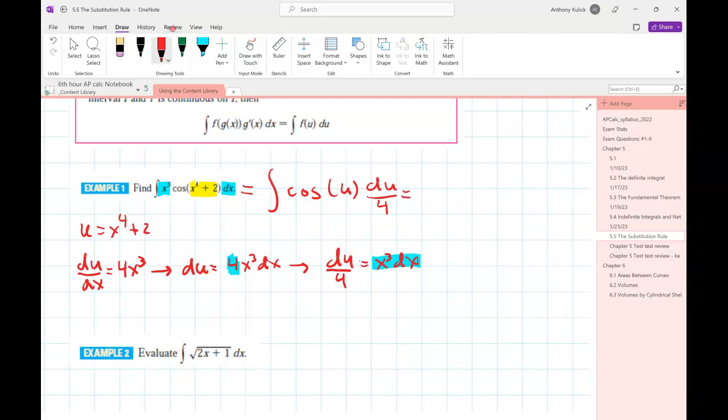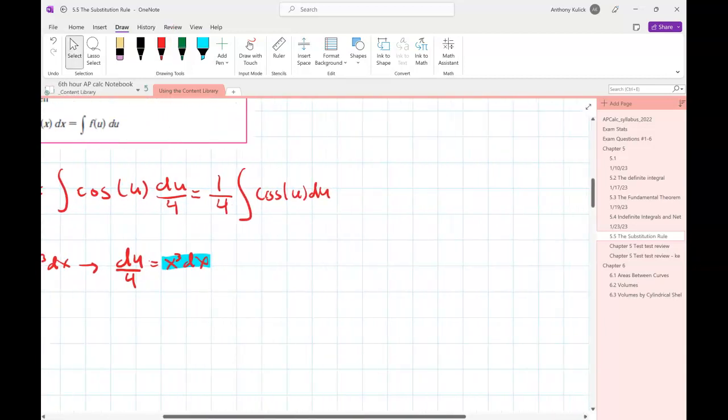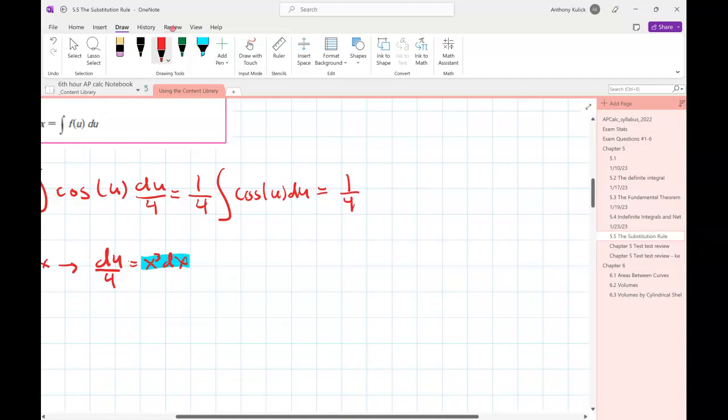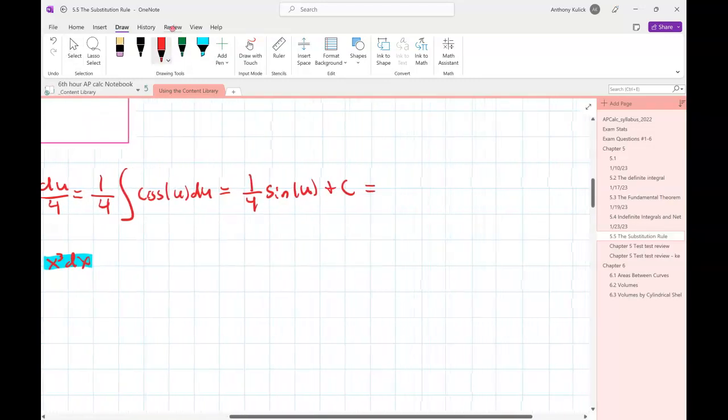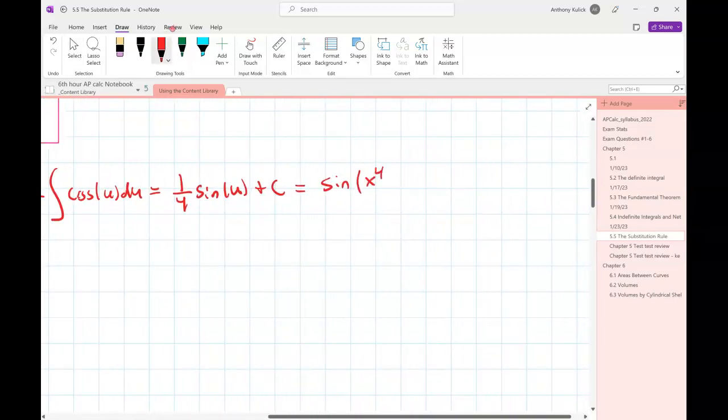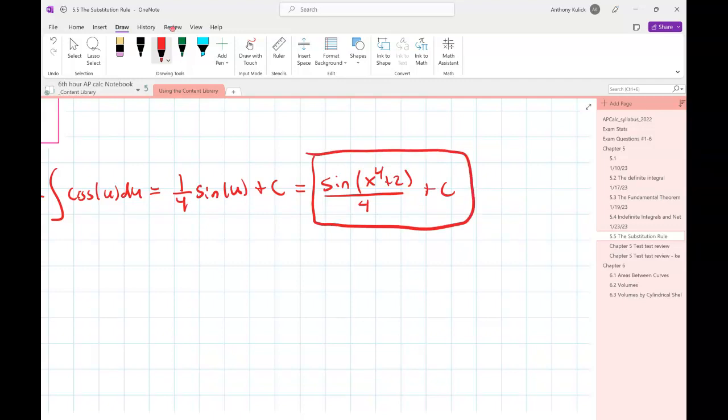So now x cubed dx is going to equal du over 4. Now that du or the 1 over 4 I can just take out to the front. And now we have an integral that we know the antiderivative for. What's the antiderivative of cosine? Sine. And then all I need to do is drop my value for u back in. What was that? x to the fourth plus 2. Okay.